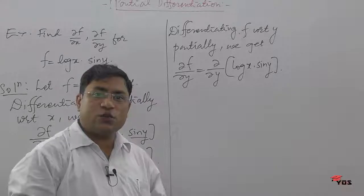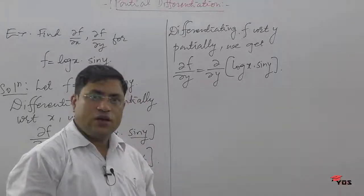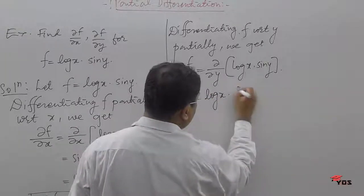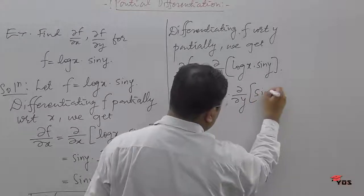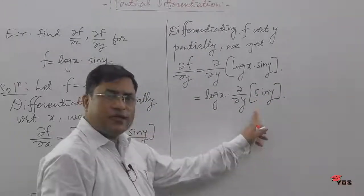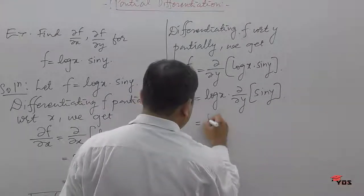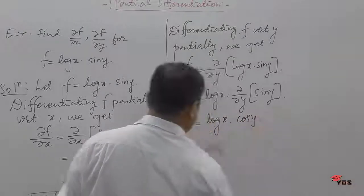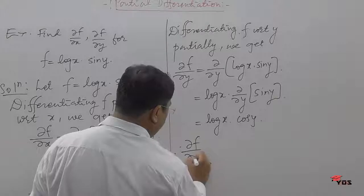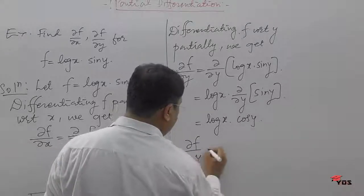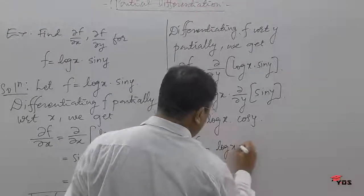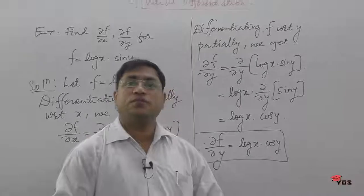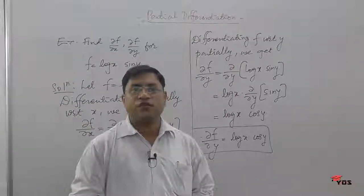When we are differentiating with respect to y, the other variable x is treated as a constant. So log(x) remains as it is, and we take ∂/∂y of sin(y). Since the derivative of sin is cosine, we get log(x) times cos(y). So the partial derivative of f with respect to y is log(x) times cos(y). This way we are able to find the first order partial derivatives of the function f.